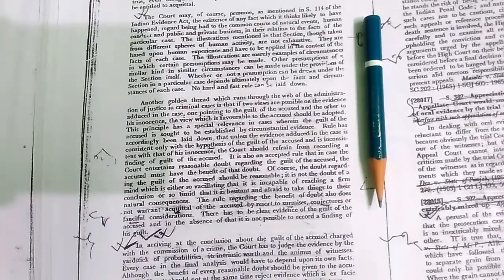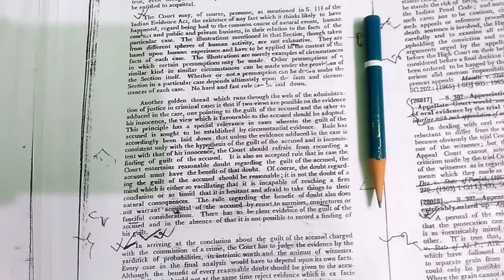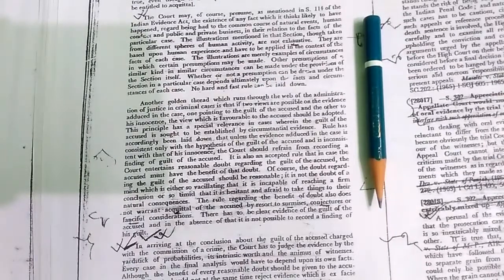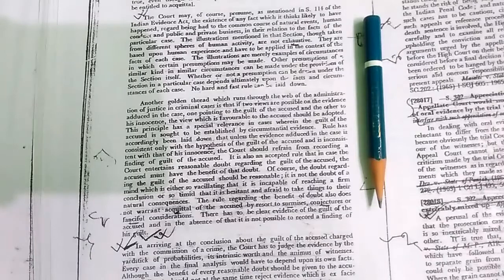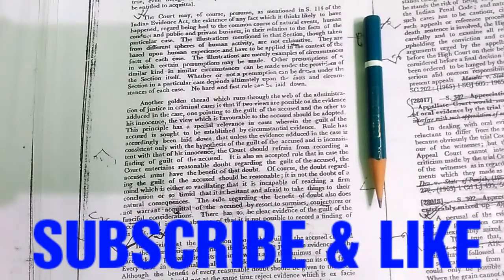Another golden thread which runs through the web of the administration of justice in criminal cases is that if two views are possible on the evidence adduced in the case, one pointing to the guilt of the accused and the other to his innocence, the view which is favorable to the accused should be adopted.